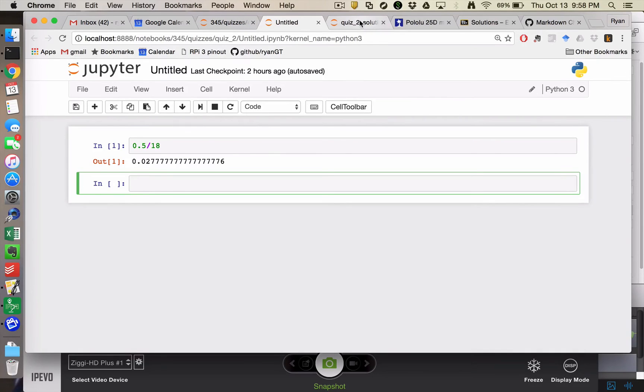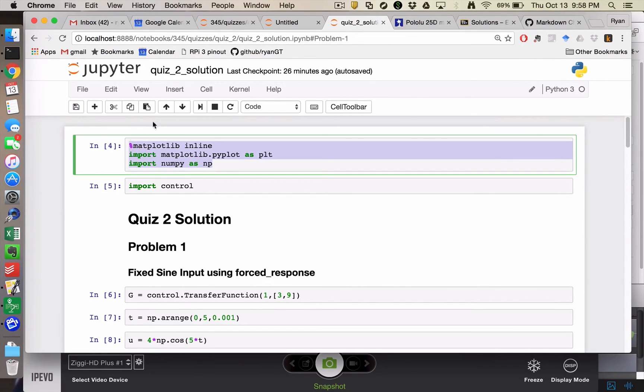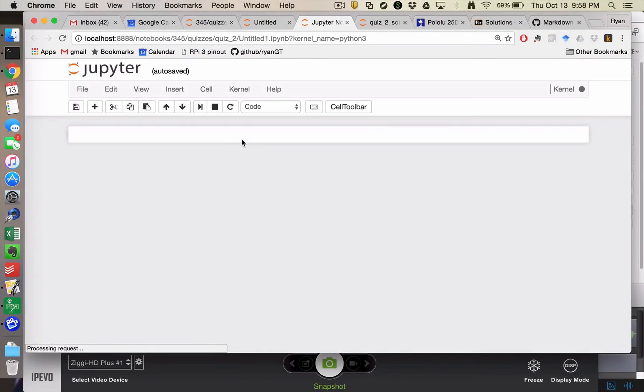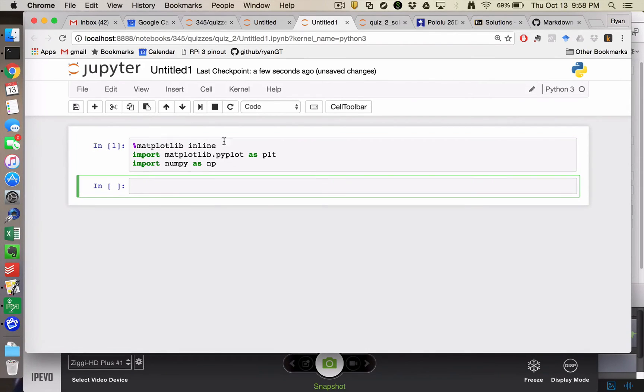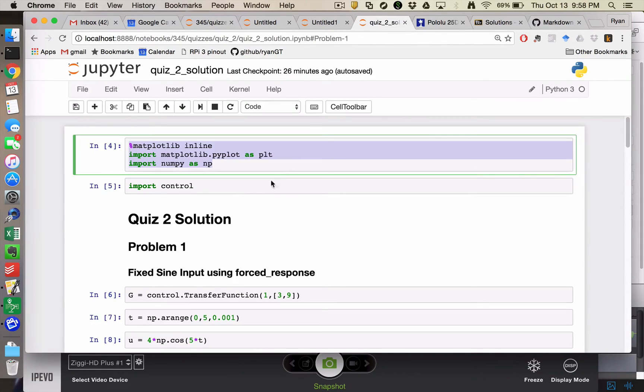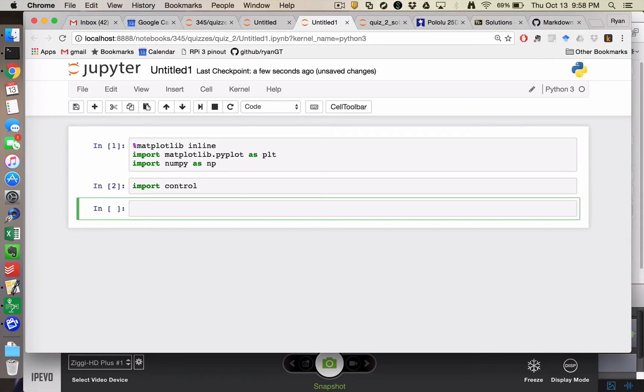So I'm going to copy and paste some of my normal things. I guess I'll just get a file new notebook. Those are my normal matplotlib and numpy imports. And then I'm just going to import the control module. And so I do that. And so like I showed in my example, my transfer function is 5s plus 7 in my numerator and my denominator is s squared plus 3s plus 2.